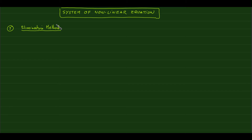For the elimination method: when you solved systems of linear equations, you needed the coefficients of one variable to be the same in both equations so you could subtract them, or opposite so you could add them. If neither, you multiply one or both equations by a constant to make them match, then add to eliminate a variable. For nonlinear systems we do the same thing.